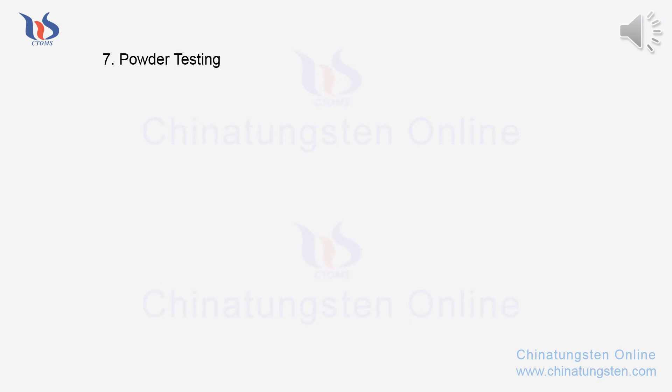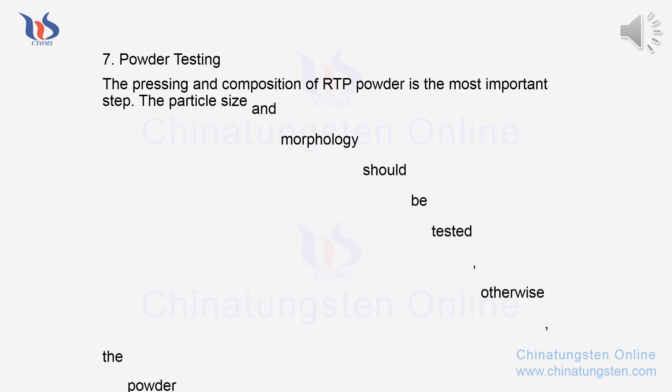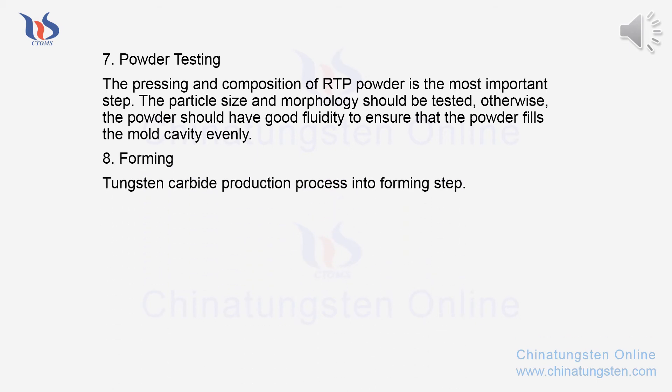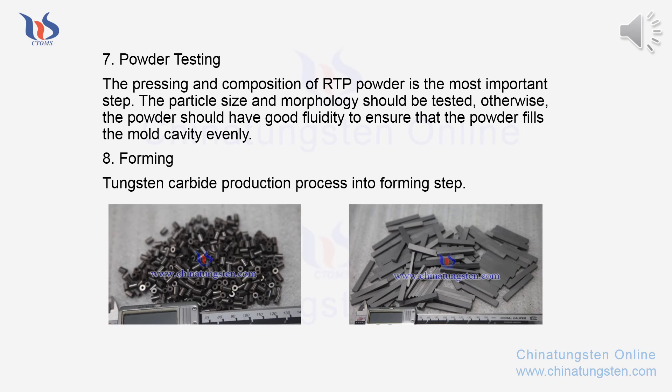Step 7 - Powder testing: The pressing and composition of ATP powder is a most important step. The particle size and morphology should be tested. The powder should also have good fluidity to ensure that it fills the mold cavity evenly. Step 8 - Forming: The tungsten carbide production process then moves into the forming step.